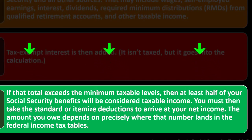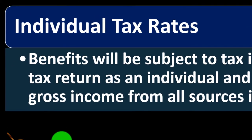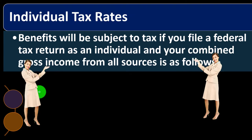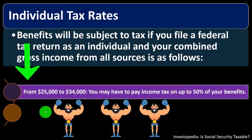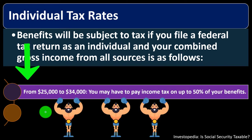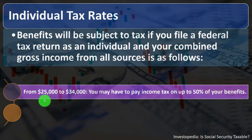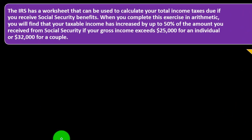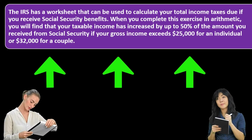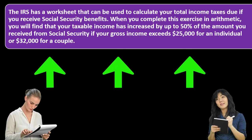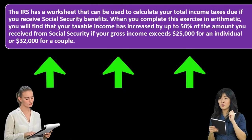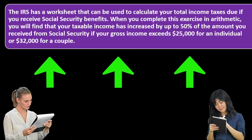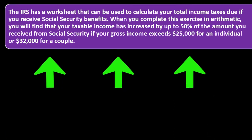The amount you owe depends on where your taxable income lands in the federal income tax tables. Benefits will be subject to tax if you file as an individual and your combined gross income is between $25,000 and $34,000 — you may have to pay income tax on up to 50 percent of your benefit. That's a fairly low threshold because it hasn't been increased with inflation. More than $34,000 and up to 85 percent of your benefit may be taxable. The IRS has a worksheet to calculate your total income tax due on Social Security benefits.